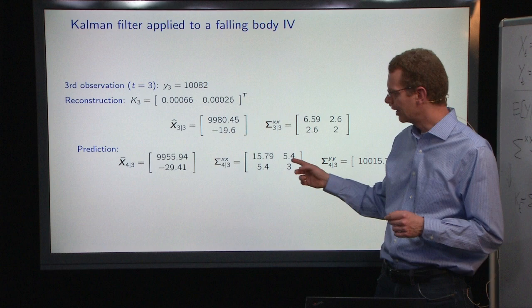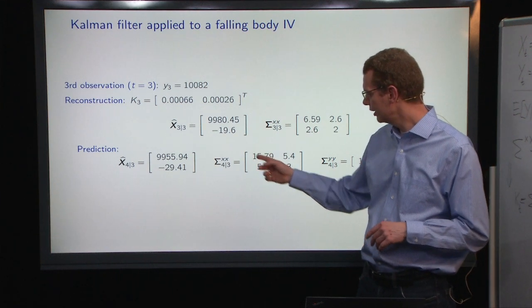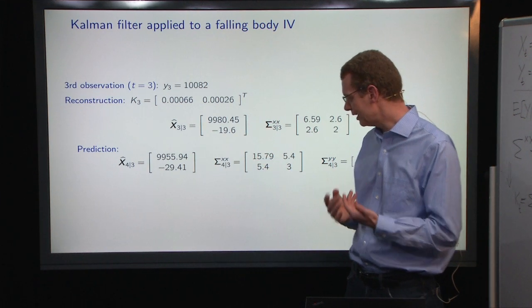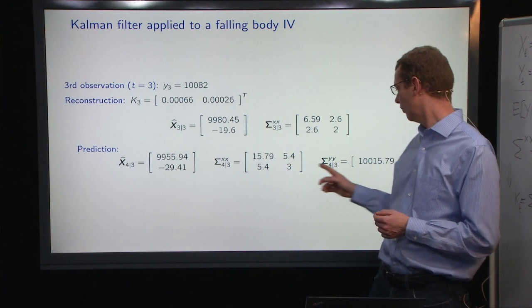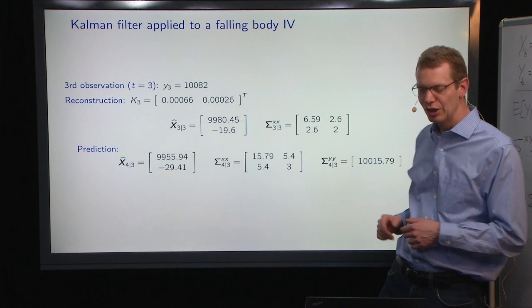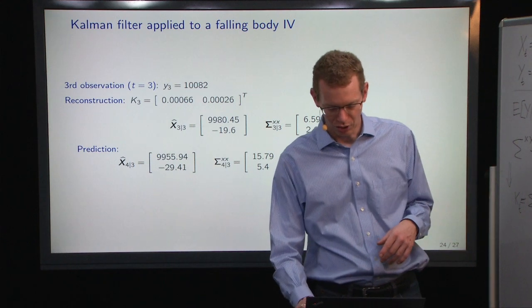Since this is so much smaller than the observation noise, the updates are very small. But we do the predictions, and the system noise, the estimate of the system, is still much smaller than the noise on the observation.